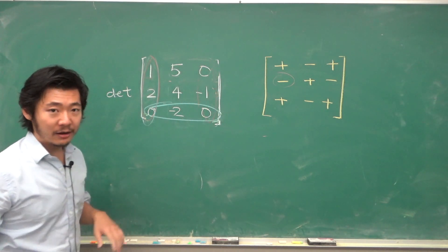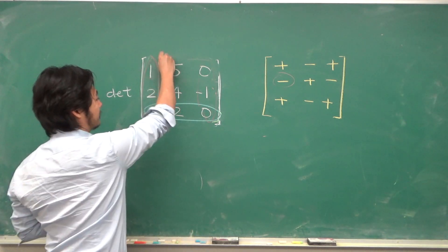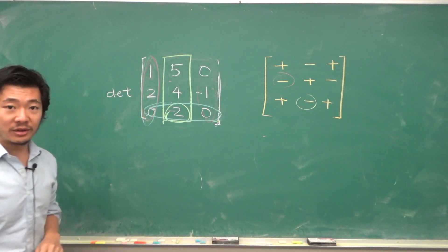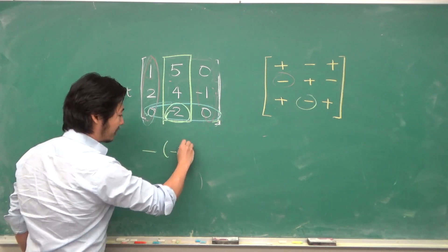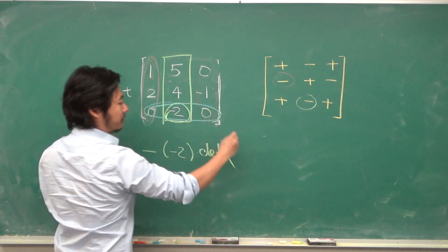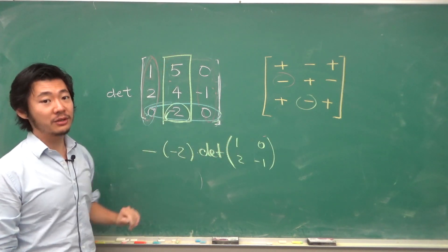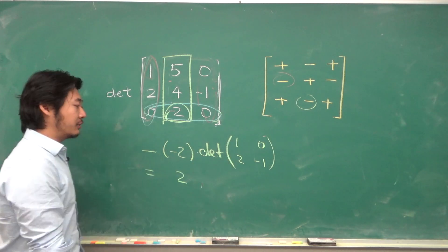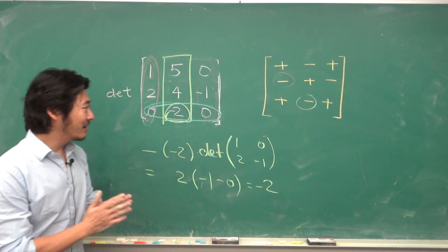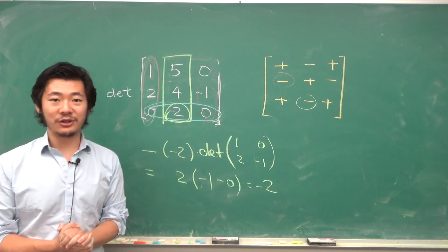The only entry that matters is the minus 2, but it's at the negative position in the characteristic matrix, so it's minus times minus 2 times the determinant of the 2 by 2 submatrix: 1, 0, 2, negative 1. Taking out that row and column, we compute 2 times negative 1 minus 0, giving minus 2. So no matter which column or row you pick, cofactor expansion gives you the same number.